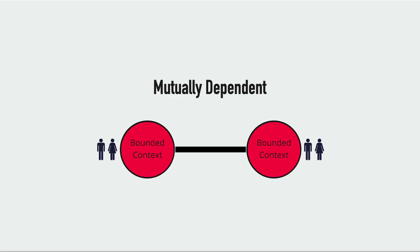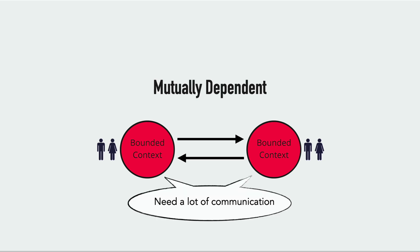Two teams or bounded contexts are mutually dependent when their software artifacts or systems need to be delivered together to be successful and to work. You often see a close reciprocal link between the data and the functionalities of these teams, and they tend to need a lot of communication between each other in order to coordinate their efforts, which often shows up in the partnership pattern in context maps.